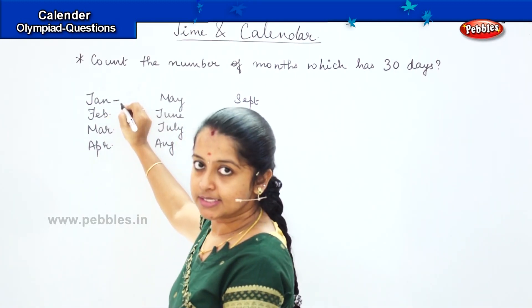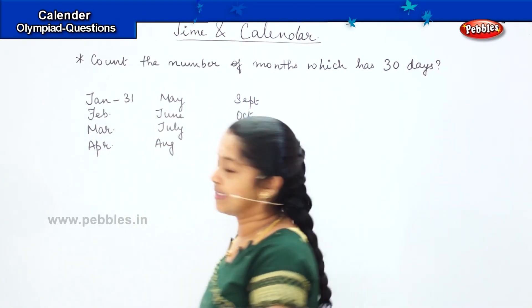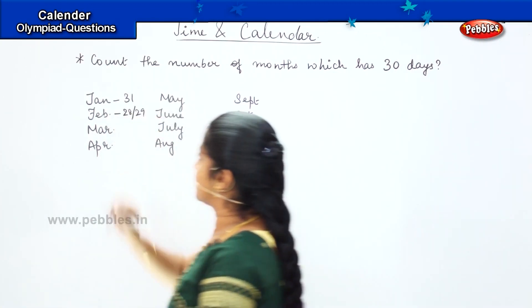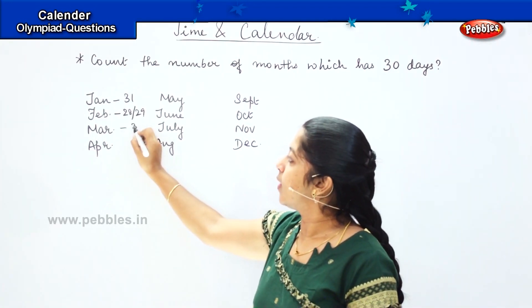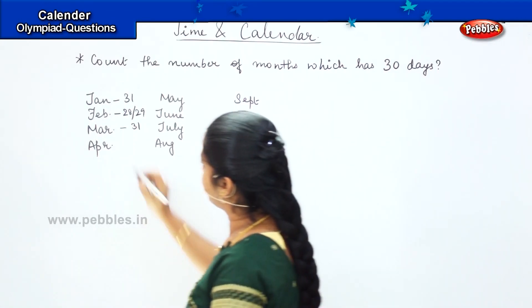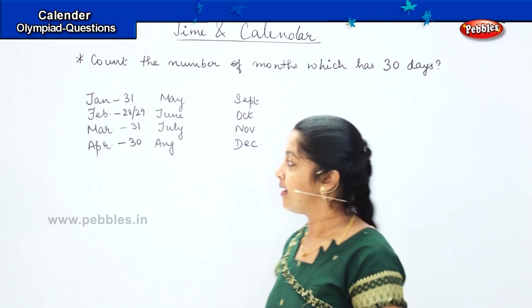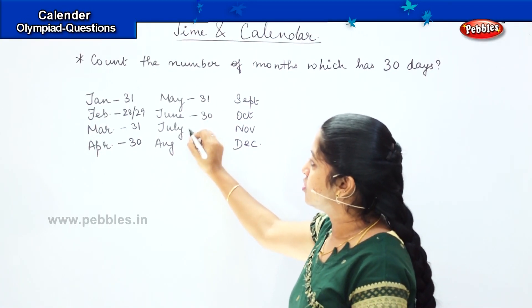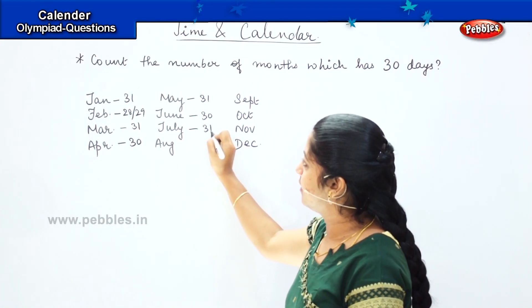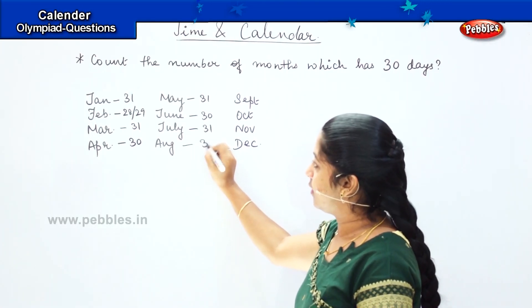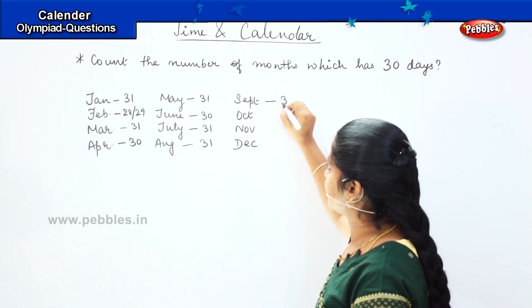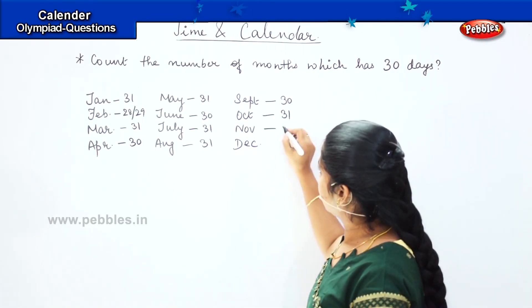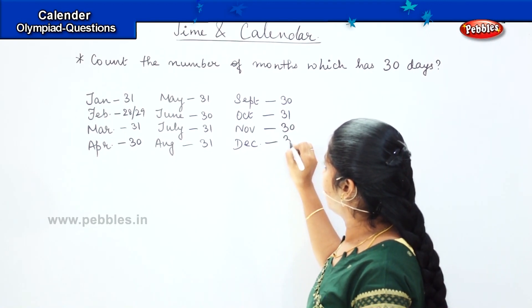Starting from January: January has 31 days. February has either 28 or 29 days. March has 31 days. April has 30 days. May has 31. June has 30. July has 31. August has 31. September has 30. October has 31. November has 30. December has 31.